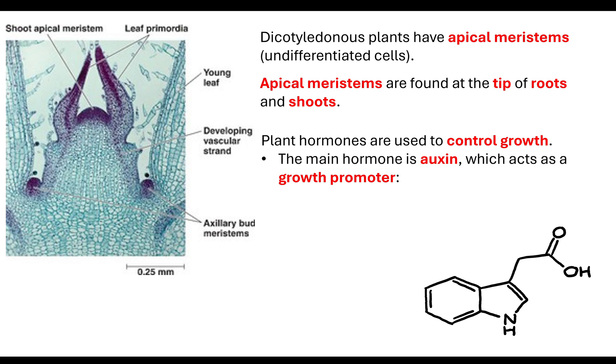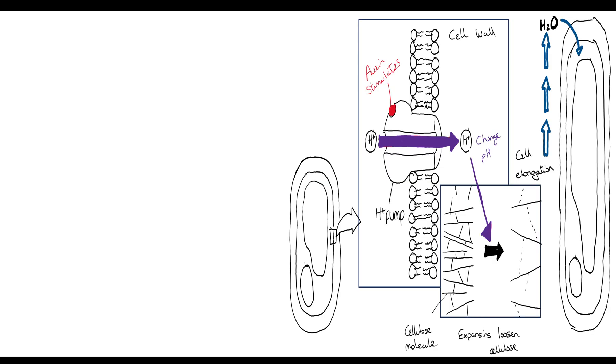The main hormone you're going to look at is auxin. Auxin is a growth promoter. It controls cell elongation, maintains what's called apical dominance, and also controls tropisms. Please check out my video on tropisms. Let's look at what auxin actually does.